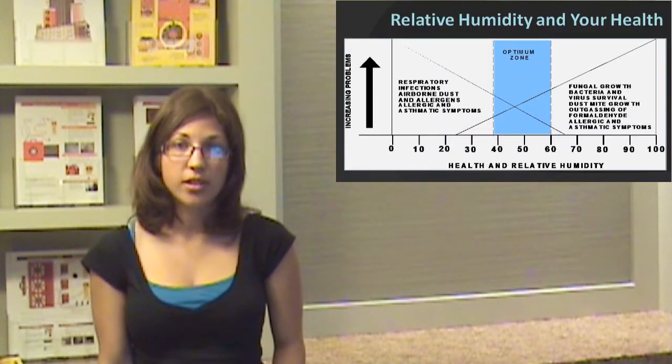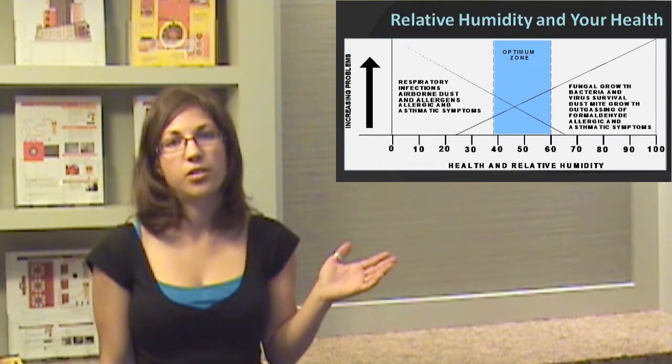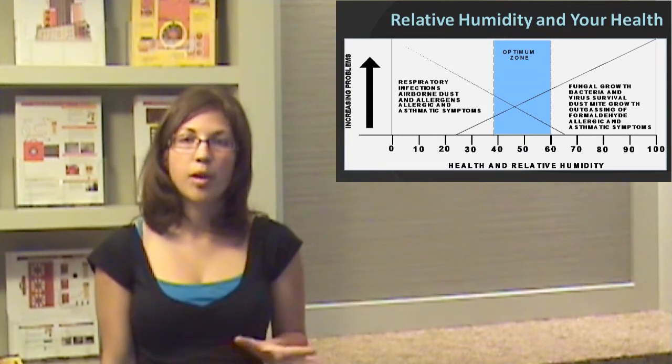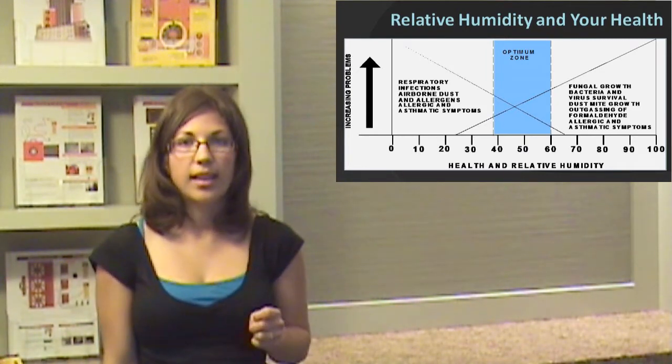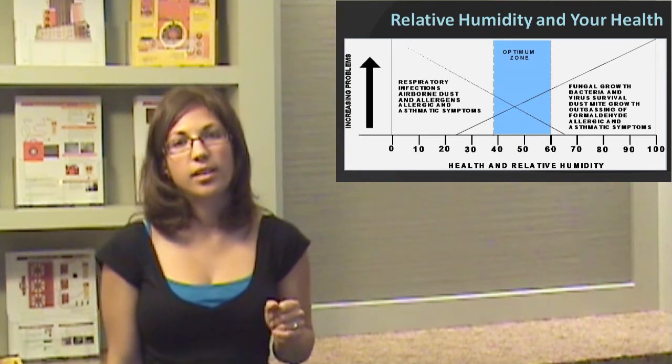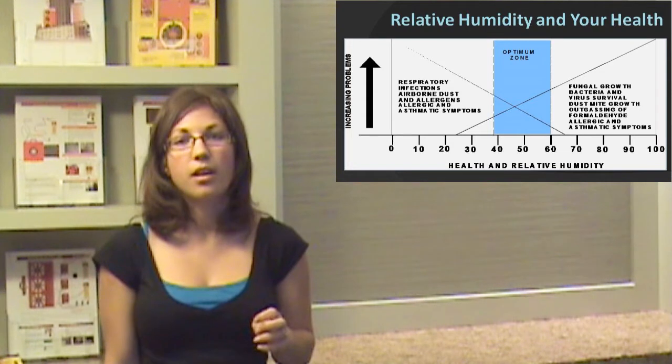And this is something that a home energy test can tell you. Another issue is relative humidity or moisture levels in your home. This graph shows the optimal relative humidity for humans, which is generally between 38 and 60. If you have too much or too little humidity — either above or below that range — you can end up having major health problems, development of mold and algae, and asthmatic symptoms.